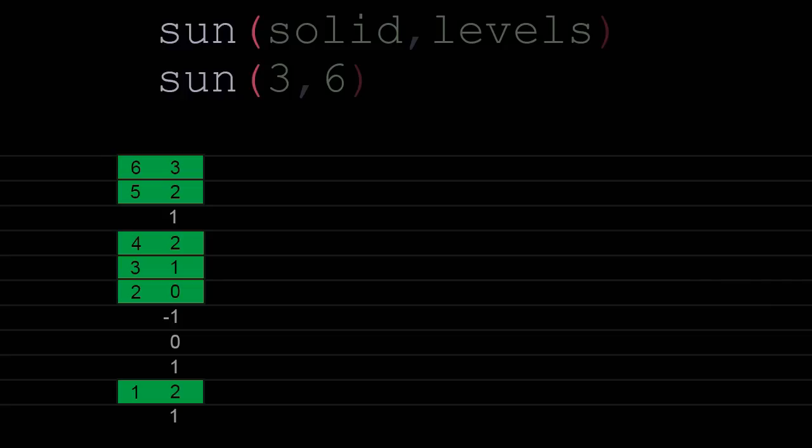We have gone through all the layers. Now on all layers where multipliers are positive numbers, we will multiply them, and we'll get the amount of energy the cell in this layer will receive. I'd like to note that with every move, the cell loses 10 units of energy. Levels equal to 6 is a fairly low level of the sun, but even with it the trees survive.